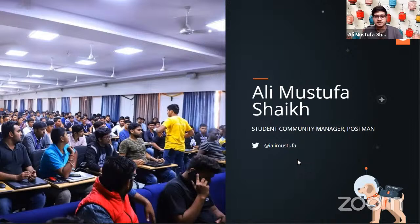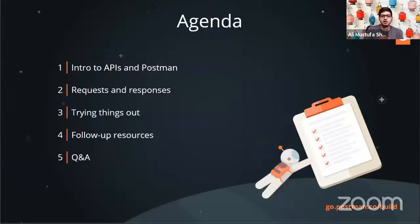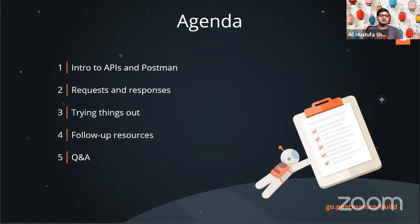My name is Ali Mustafa, and I'm a student community manager at Postman. I love talking with students, especially those who are into technology and from a computer science background. I call myself someone who builds human networks, not computer ones. I love working with machine learning, and APIs are my favorite. The agenda is simple: we'll discuss APIs in general, go deeper into request-response, do hands-on practice, and at the end I'll share how you can get some really cool Postman swags like t-shirts and stickers.